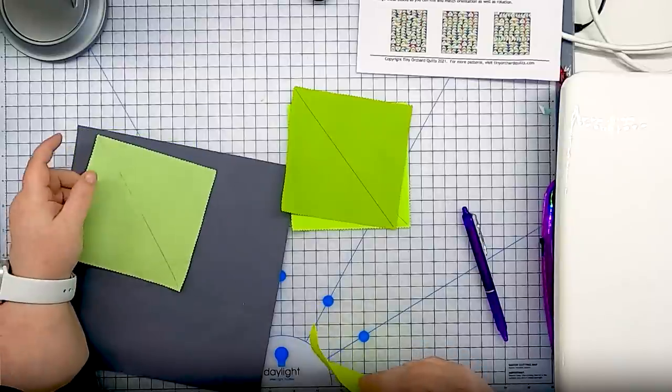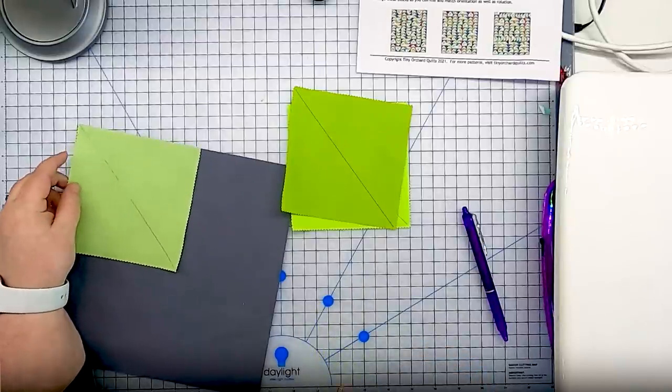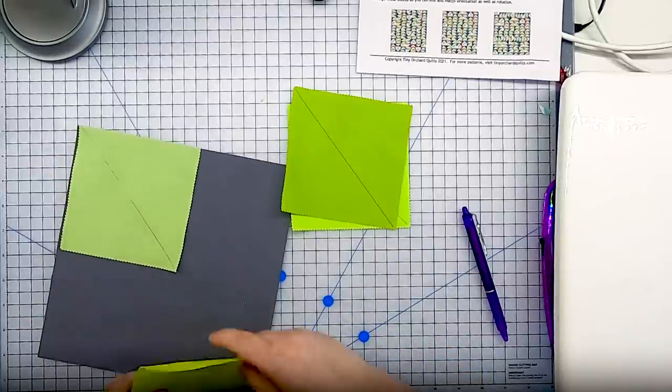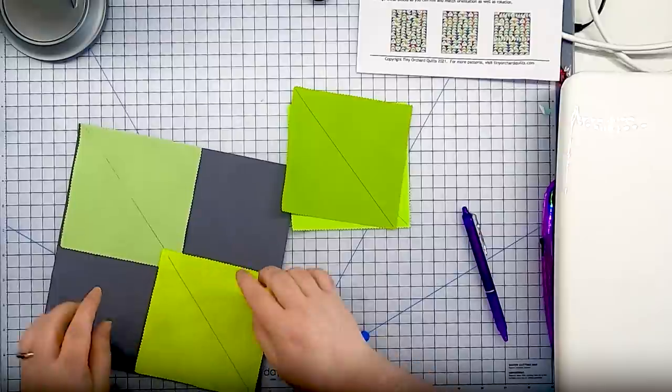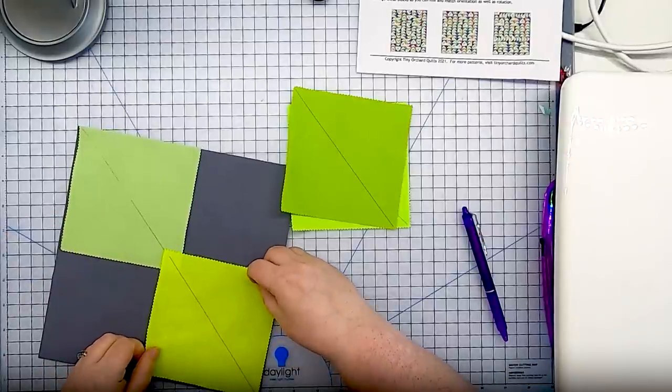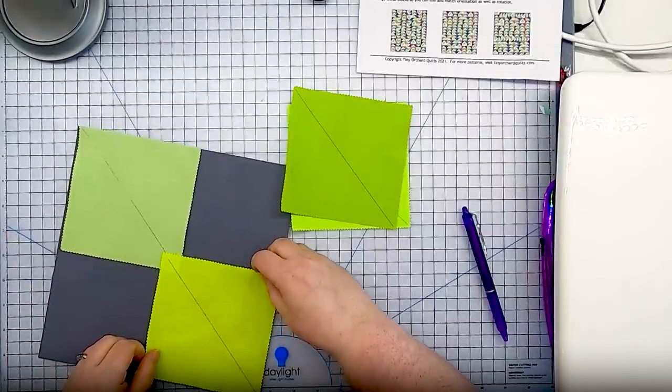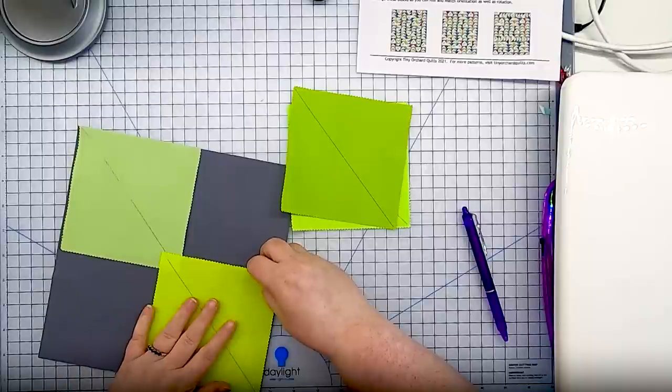When I made my quilt I randomly chose my small squares for this step but if you have two squares that you definitely don't want to be on the same flying goose at the end then you should use them both in this first step and then they will be on two different flying geese units when it's all cut apart.